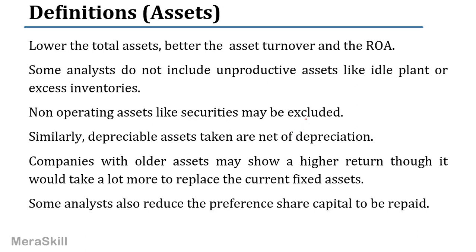Lower the total assets, better the asset turnover and better the return on assets. Sometimes in total assets, unproductive assets such as idle plant are excluded, so you know the actual efficiency of what is really being used. Excess inventories may also be excluded. Non-operating assets like securities may be excluded — for example, extra cash invested in securities earning non-operating income. When taking depreciable assets, they are taken net of depreciation, so companies with older assets will show higher profitability.